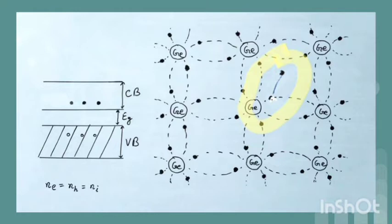As temperature is increased, more electrons shift to conduction band, leaving behind an equal number of holes in the valence band. Hence conductivity of semiconductor increases with rise of temperature. In intrinsic semiconductor the number of free electrons and that of holes is exactly the same. When external electric field is applied, the free electrons as well as holes both move in opposite directions and hence current flows through the crystal.